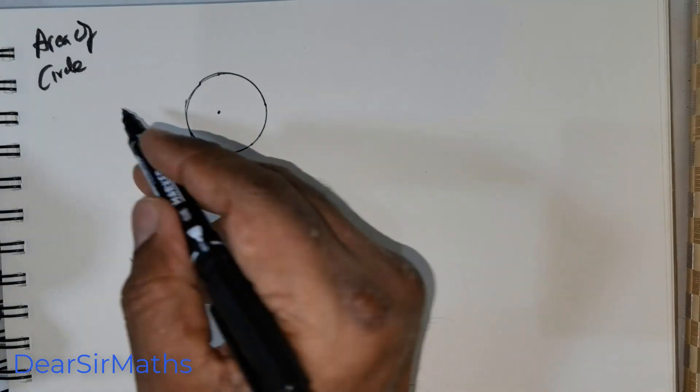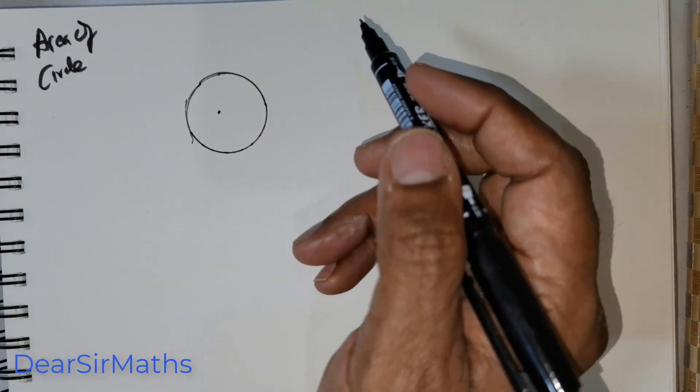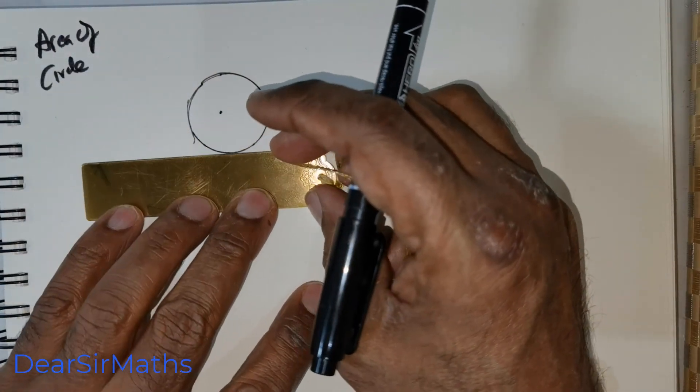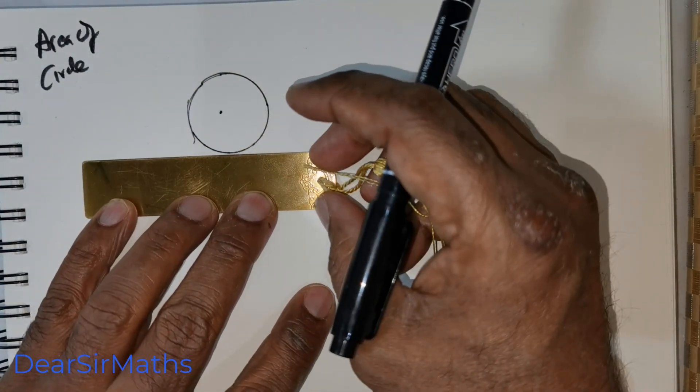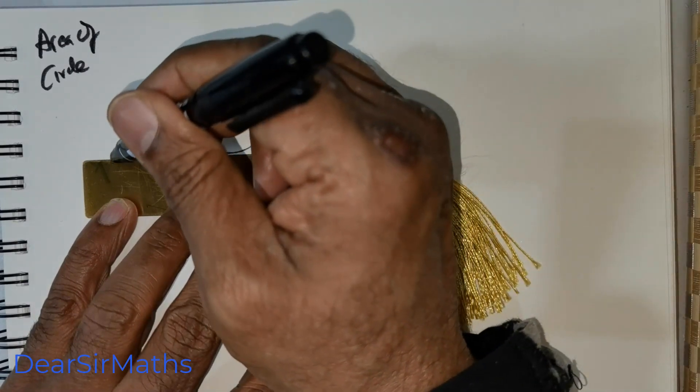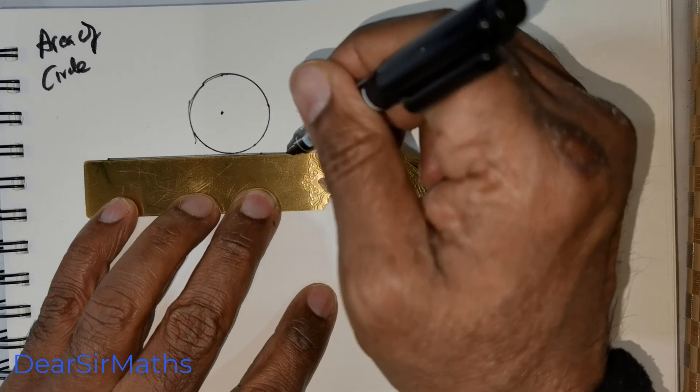We are expected to find the area of the circle. Now, the circle is inscribed inside a triangle. So, let me draw the triangle.